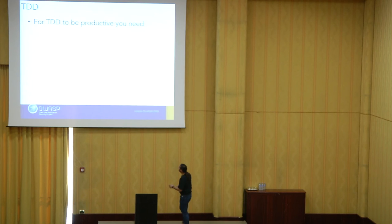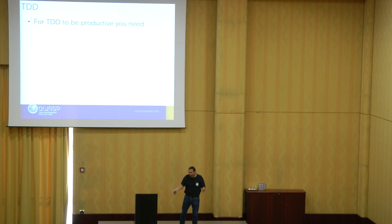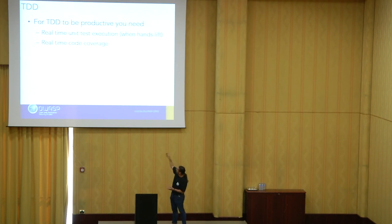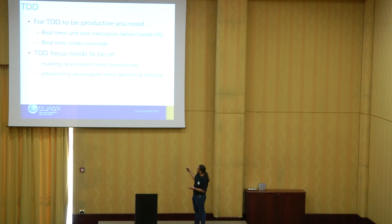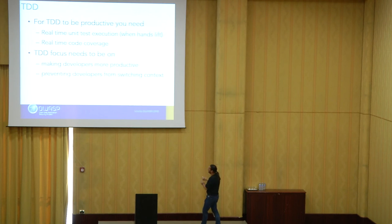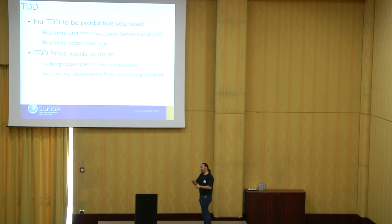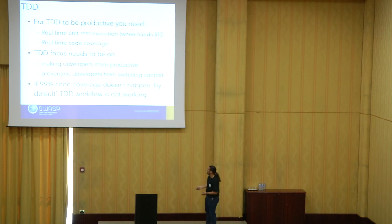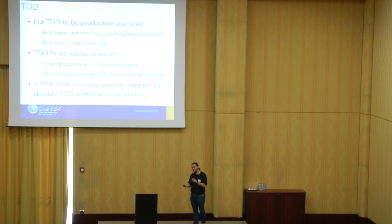For TDD to be productive — which is the other massive part of this workflow — you need real-time unit test execution, basically when your hands lift off the keyboard, and real-time code coverage. You need to make developers more productive and prevent them from switching context, which happens when they have to move from their IDE to test something. TDD is key for this whole workflow because that's what allows the tests to really be created. If 90% coverage is not happening, it means your TDD is wrong.